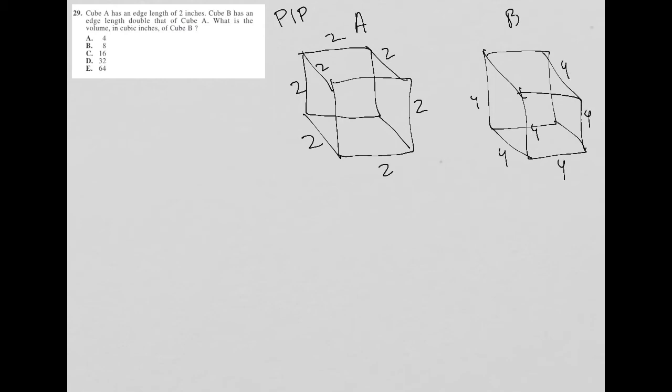What is the volume in cubic inches of cube B? Well, how do you find the volume of a cube? The volume of a cube is just the length times the width times the height, and because it's a cube, all of these numbers are the same, so sometimes you'll see it as just S cubed where S represents the side length.